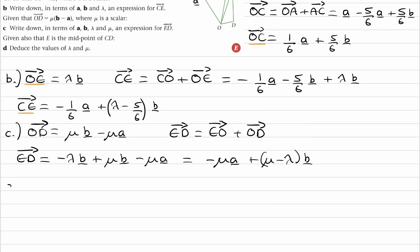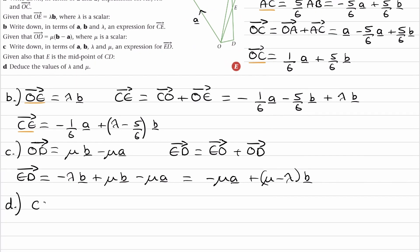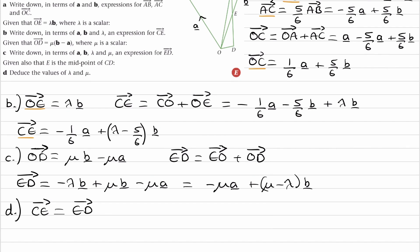And finally for part D, we are told E is the midpoint of CD, so E is halfway along this line. If that's the case, then that would mean that CE is equal to ED. And we're trying to find out the values of lambda and mu.